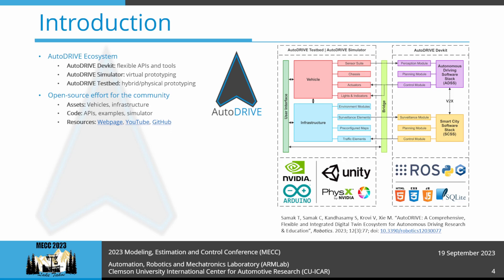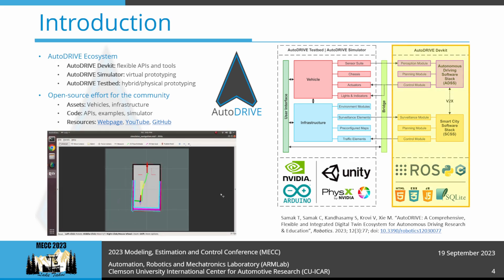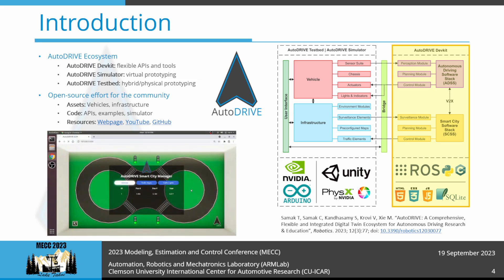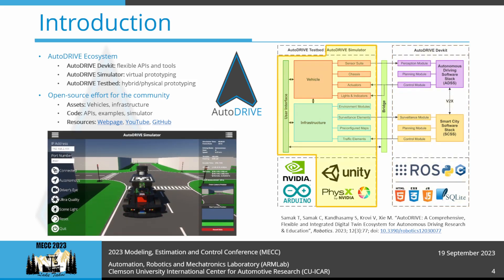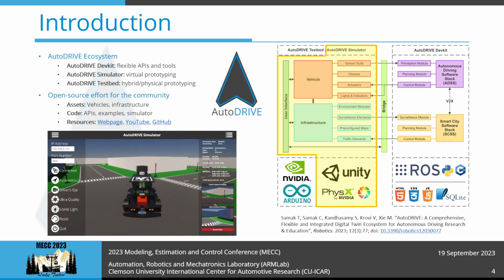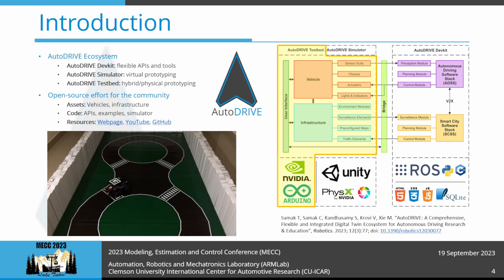Autodrive is a comprehensive, flexible, and integrated digital twin ecosystem for synergistically developing, simulating, and deploying research projects targeted towards autonomous driving while also supporting smart city infrastructure. Autodrive hosts a tightly coupled triad: the Autodrive Dev Kit to flexibly develop connected autonomy solutions; the Autodrive Simulator to virtually prototype and test them under a variety of conditions and edge cases; and the Autodrive Testbed to deploy and validate them in controlled real-world settings. The integrity and harmony among these three subsystems enhances hardware-software co-development and helps seamlessly bridge the gap between software simulation and hardware deployment for verification and validation of these safety-critical systems.